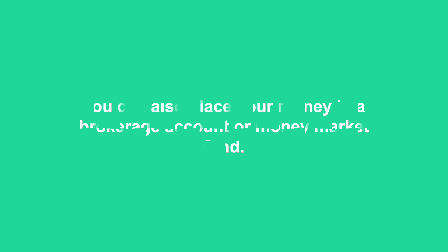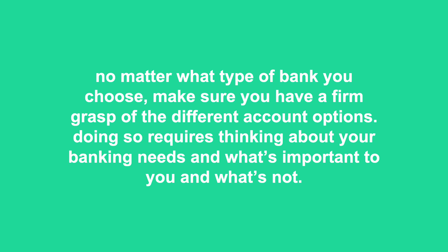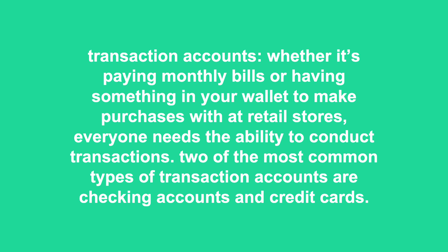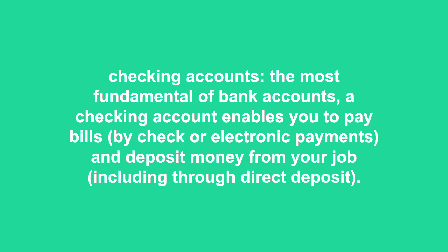You can also place your money in a brokerage account or money market fund. No matter what type of bank you choose, make sure you have a firm grasp of the different account options. Transaction accounts: everyone needs the ability to conduct transactions — two of the most common types are checking accounts and credit cards. A checking account enables you to pay bills by check or electronic payments and deposit money from your job, including through direct deposit. Interest paid is generally low or non-existent and you need to watch out for various fees. During periods of low interest rates, the fees levied on a transaction account should be of greater concern to you than the interest paid on account balances.